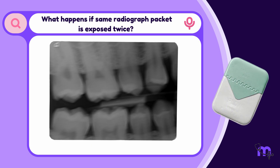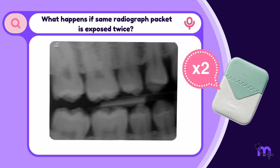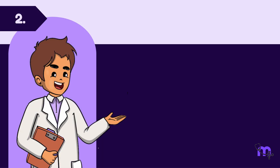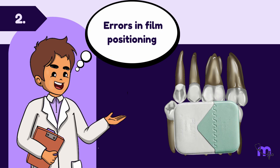Exposing the same radiograph packet twice also results in a blurred image. The next step where errors occur is when positioning the film.